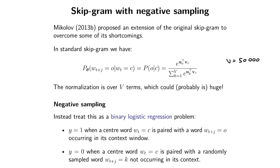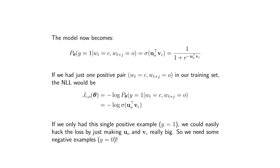So instead of outputting a huge probability vector over all the words in your vocabulary, the model outputs a value between zero and one for whether this specific center word occurs with this context word. The model becomes a function that outputs a value between zero and one for whether a particular context word occurs with a particular center word. You want the model to output values close to one if these two actually occur together in a context window, and close to zero when they don't.